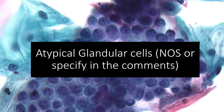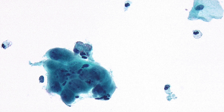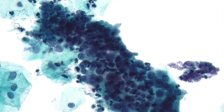The AGC NOS category is used when it is not possible to give an origin, and origin should be indicated whenever possible. Cells are in sheets and strips with some crowding and overlap. Nuclear enlargement is three to five times a normal endocervical cell. There is mild nuclear hyperchromasia, mild chromatin irregularity, rare mitotic figures, and increased nuclear-to-cytoplasmic ratios, but still relatively abundant cytoplasm.